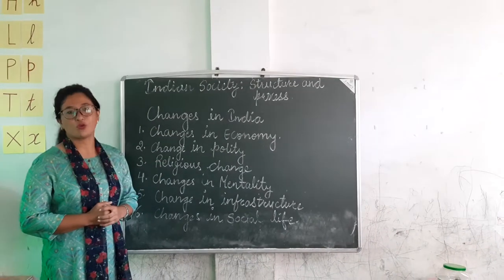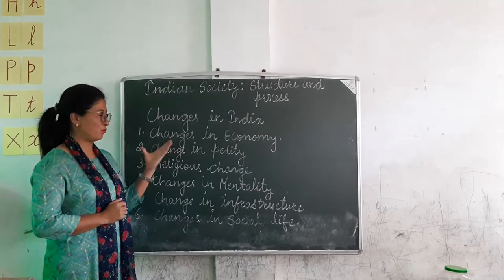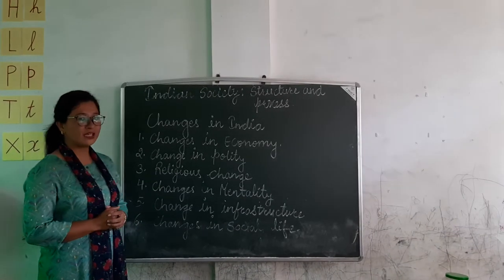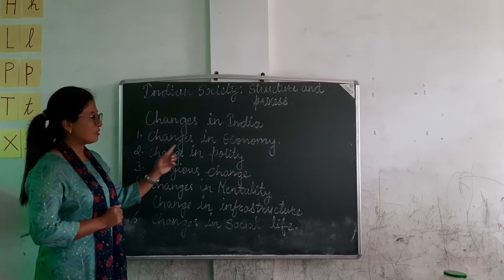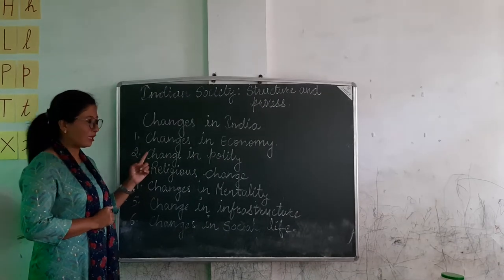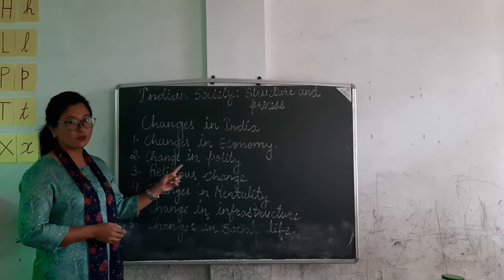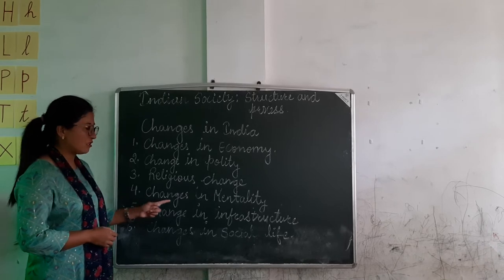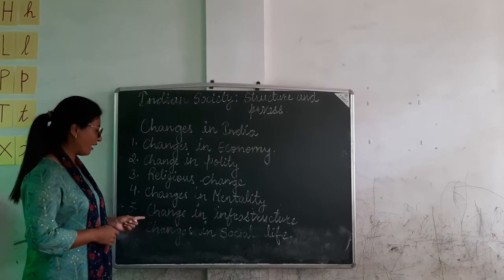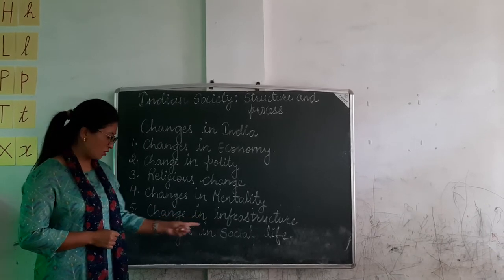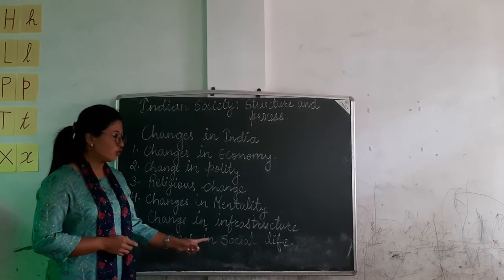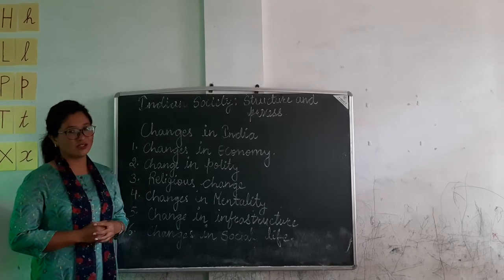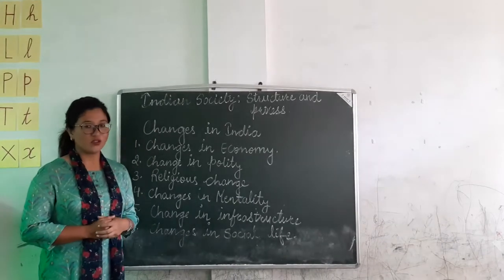Now, changes in India — the social changes we can see are: number one, changes in economy; number two, change in polity; number three, religious change; number four, changes in mentality; number five, change in infrastructure; number six, changes in social life.